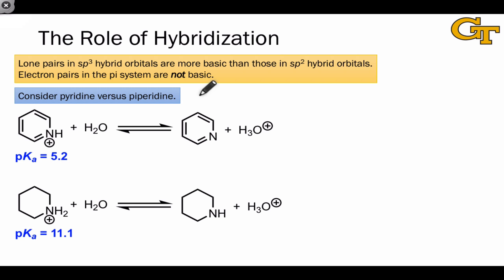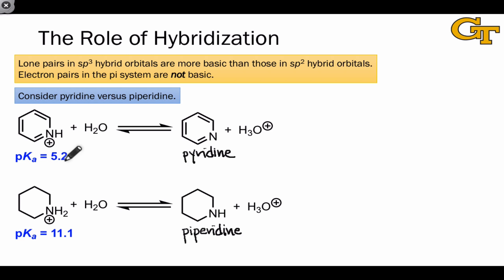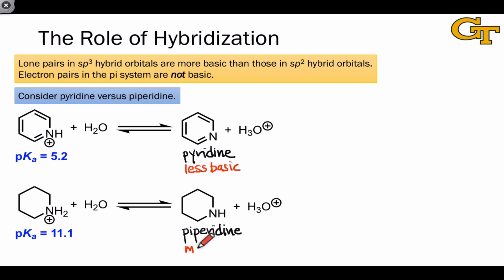First, let's consider the role of hybridization in the acidity or basicity of heterocycles. We're going to look at pyridine compared to piperidine, which is a hydrogenated compound related to pyridine — when pyridine is fully hydrogenated, the result is piperidine. The pKa values shown here indicate that the conjugate acid of pyridine is significantly more acidic than the conjugate acid of piperidine. Using the conjugate seesaw, we can reason that neutral pyridine is less basic than piperidine.